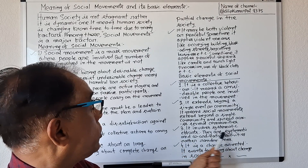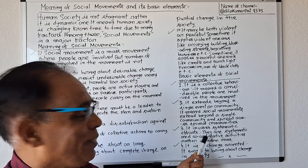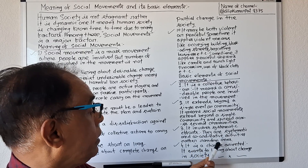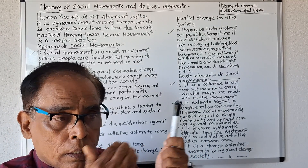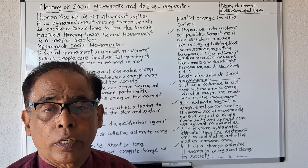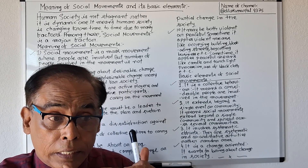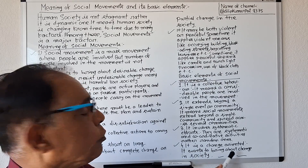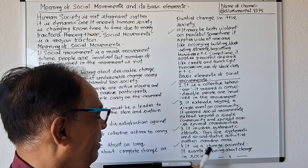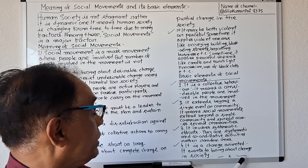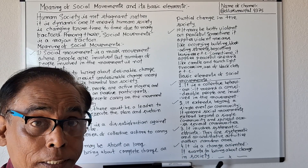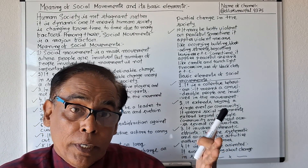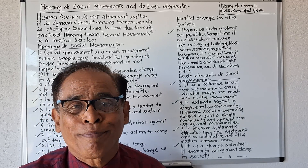Number three: it involves systematic efforts. Social movements are systematic and coordinated activities rather than random ones. Finally, number four: it is change-oriented. It wants to bring about change — it may be complete change or partial change. So these are the four basic elements of social movements.